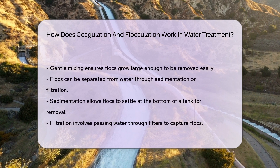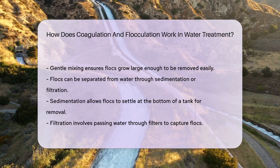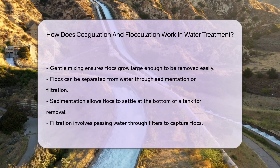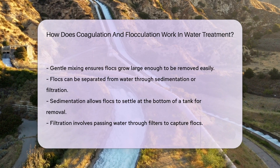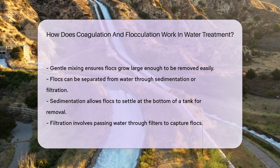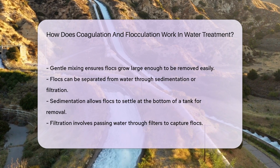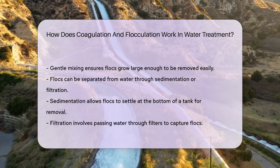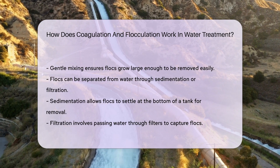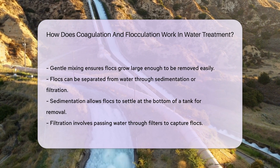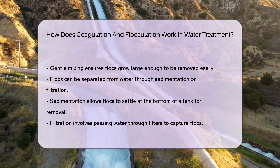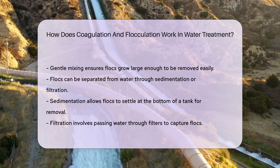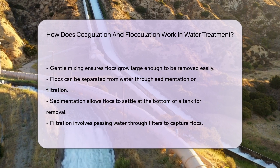Once the flocs are formed, they can be separated from the water through sedimentation or filtration. Sedimentation allows the flocs to settle at the bottom of a tank, where they can be removed. Filtration involves passing the water through filters to capture the flocs. These steps are crucial for removing contaminants and ensuring water safety.